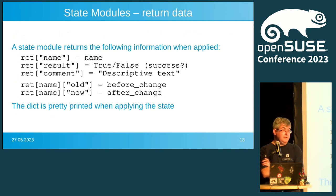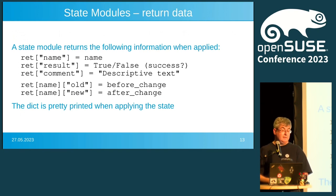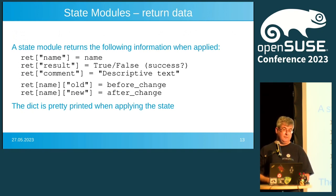What is also described in the documentation — though not trivially obvious — is how the state module returns success or failure. You provide a Python dictionary with the name of the file or key used, the result (was it successful or not), and a descriptive text such as 'user store has been deleted,' 'changed,' or 'added.' For each key you can provide an old and a new value so Salt can display a diff for the user, showing what has been changed on the system.